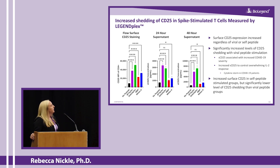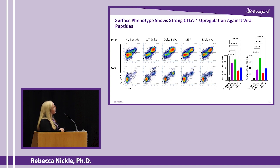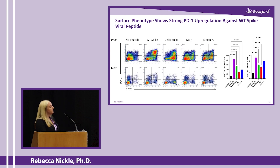Thinking about regulation, soluble CD25 regulates IL-2 — but what about other markers of regulation such as CTLA-4 and PD-1? Looking at CTLA-4, with CD4 T cells on the top and CD8 T cells on the bottom, we see a massive increase in CTLA-4 expression in the viral peptide-induced groups. There is still an increase among the MBP and MLNA self-peptide groups, but not as pronounced. Similarly, we see an increase in PD-1 expression among viral peptide-induced cultures, showing a very similar pattern to CTLA-4 and soluble CD25.